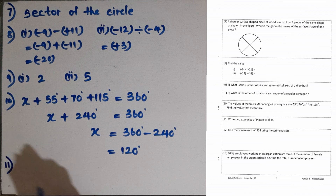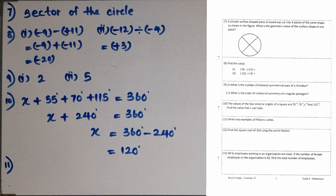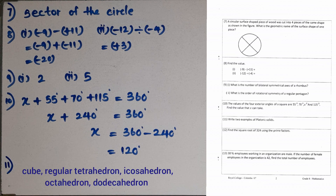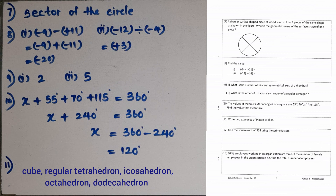Question number 11. Write two examples of platonic solids. There are five platonic solids: cube, regular tetrahedron, icosahedron, dodecahedron and octahedron. You can name any two of them.